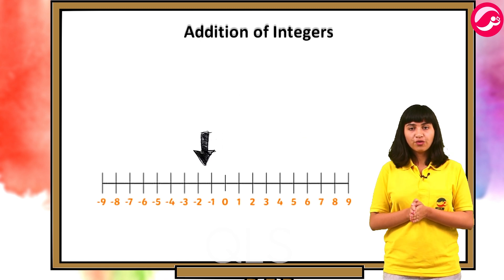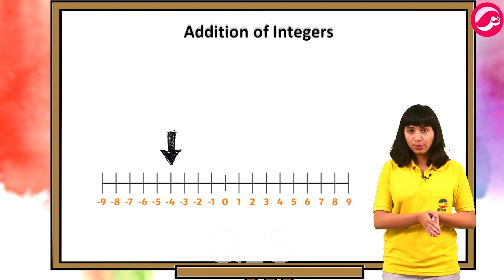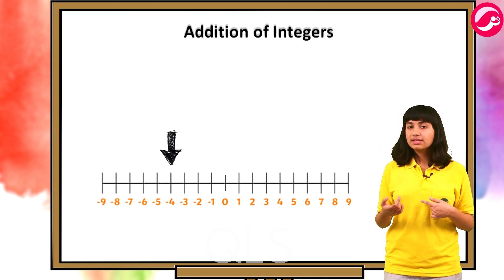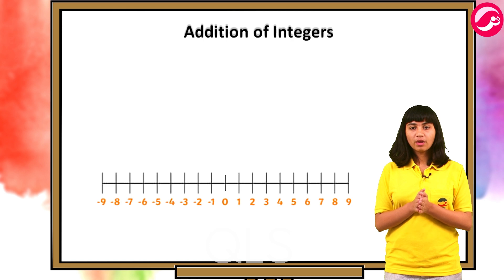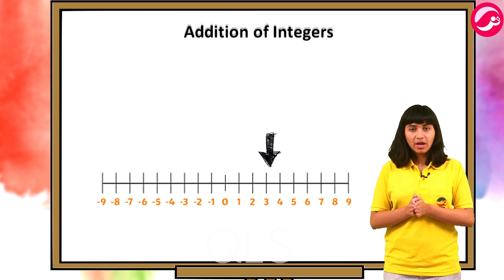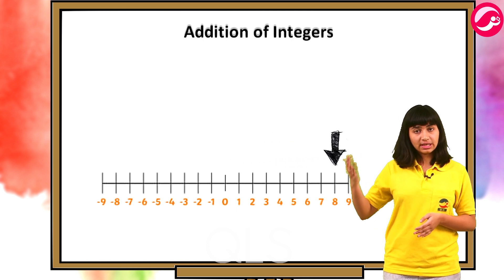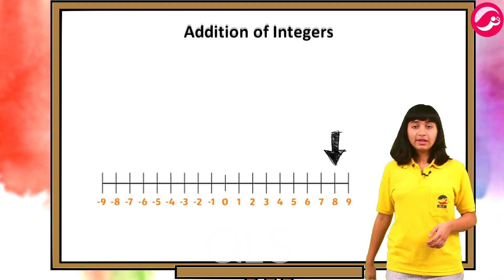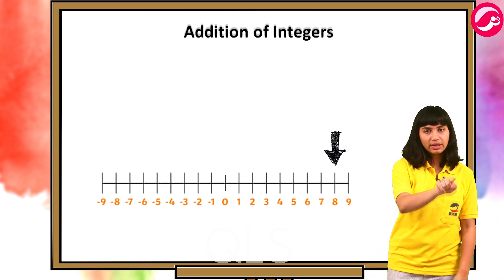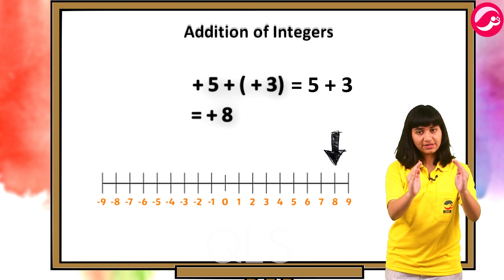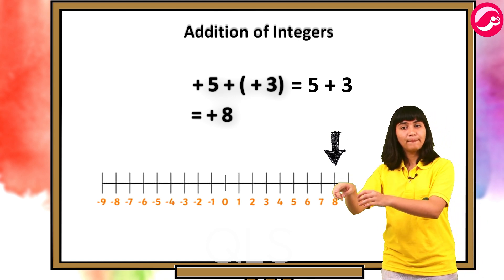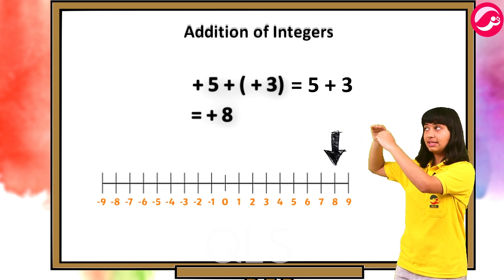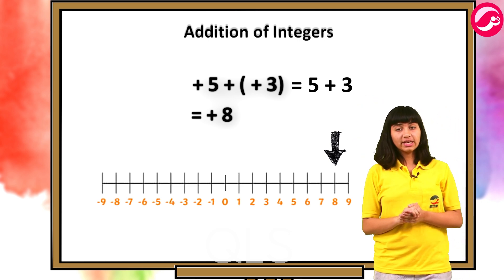Go four steps down from the ground — hume 4 steps neeche utarna hai — minus four. Go five steps up from the ground and then go three steps further up — pahle mein paanch sidiyan chadhuungi, phir teen aur. Toh mein likhungi plus five, phir plus three — kyunki mein pahle plus five chadhi phir plus three — toh woh ho jayega plus eight.